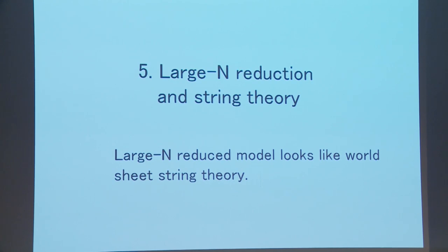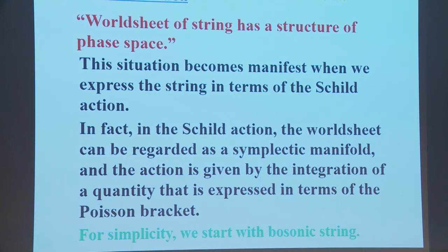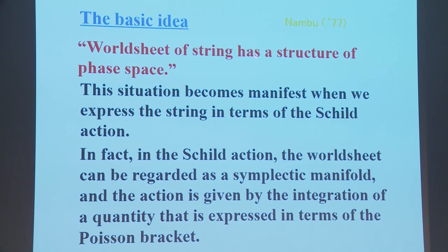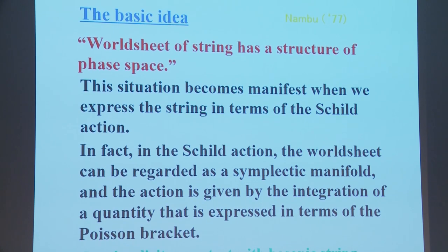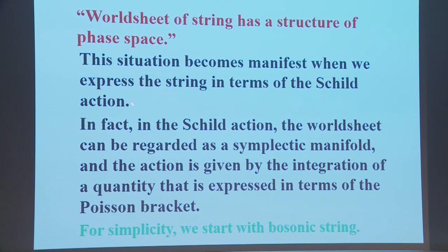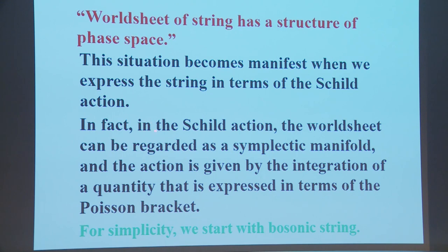Now I discuss the relation between the large-N reduction and string theory. The large-N reduced model looks like worldsheet string theory. This idea comes from Nambu in 1977. The basic idea is that the worldsheet of a string has a structure of phase space. This becomes manifest when we express the string in terms of the Schild action, where the worldsheet can be regarded as a symplectic manifold, and the action is given by integration of a quantity expressed in terms of the Poisson bracket.